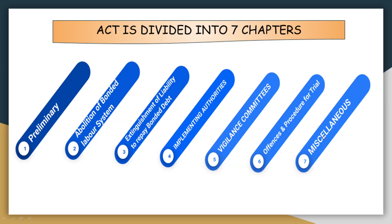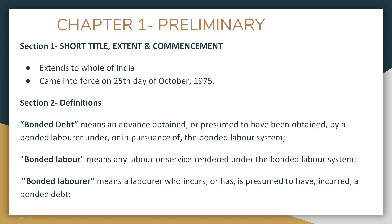As I told you last time, the Act is divided into 7 chapters. Now we have to discuss these 7 chapters one by one. Let's start. Chapter 1 is 'Preliminary.'